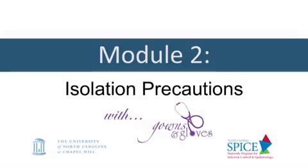Hi, and welcome to Module 2, Isolation Precautions. As you learned in Module 1, standard precautions are the foundation for preventing the spread of germs like bacteria, fungi, and viruses. Many of these germs spread even with the use of standard precautions, and the addition of isolation precautions, or transmission-based precautions, is required based on how harmful these germs are and how they spread. In this module, we will review standard precautions and describe the three isolation precaution categories: contact precautions, droplet precautions, and airborne precautions.